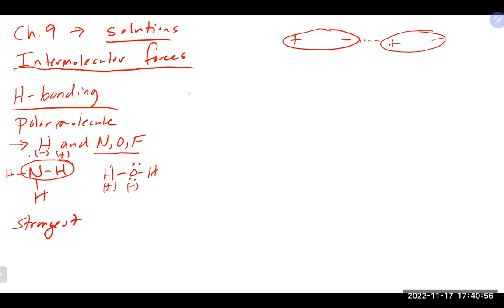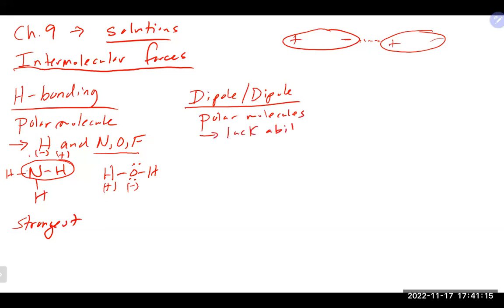The next intermolecular force is dipole-dipole interaction, which is the main intermolecular force for polar molecules that lack the ability to hydrogen bond. Those molecules that cannot hydrogen bond but are still polar will use dipole-dipole interaction. The truth is, hydrogen bonding really is a form of dipole-dipole interaction.